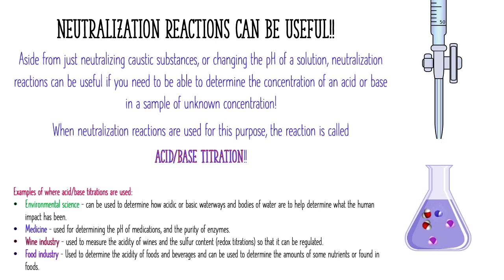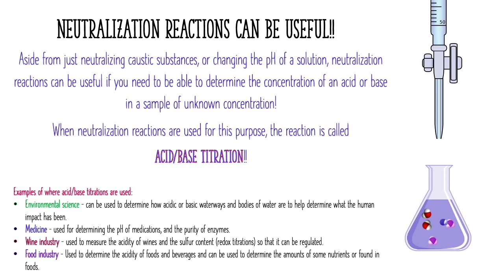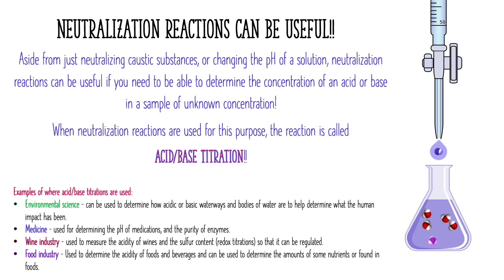Some examples of where titrations are useful: in environmental science, a scientist might test a waterway to see how acidic it is or determine the human impact on water acidification. In medicine, titrations are used to determine the pH of medications. In the wine industry, they measure the acidity of different wines. In the food industry, they determine the acidity of foods and beverages, and in some cases the nutrients found in those foods.